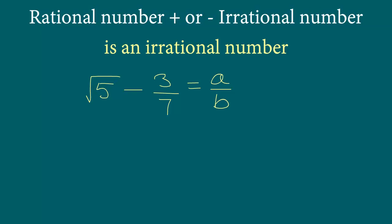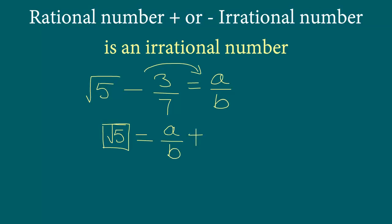What we are going to do is again isolate the square root term on the left-hand side all by itself and get everything on the other side of the equality sign. So in this case we will have square root 5 equal to a/b plus 3/7.